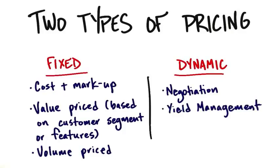Airlines are a great example of another type of dynamic pricing called yield management. Once an airplane takes off, they can no longer sell those seats. So a month before the flight, those seats might be $500; a week before, they might go up to $600; an hour before, they might drop down to $99 because the plane is leaving and empty seats generate no revenue. Yield management is quite interesting and is based on experience, time, etc. Software programs in industries like airlines and car rentals — which have perishable seats or time — are quite good at doing this.